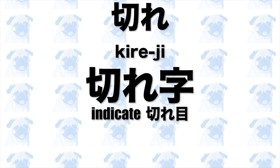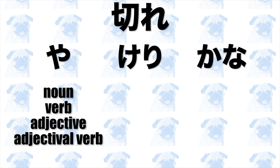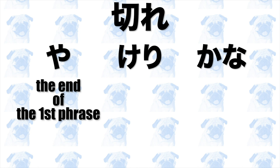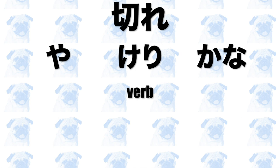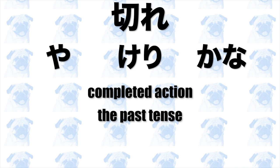Although not always necessary, there are a set of particles called kideji which explicitly indicate the kideme of a haiku. The most common kideji are ya, keri, and kana. Ya is normally preceded by a noun but can sometimes follow a verb, adjective, adjectival verb, or auxiliary verb. It tends to appear at the end of the first phrase and indicates admiration, surprise, and so on. Keri follows either a verb, adjective, adjectival verb, or auxiliary verb — and unlike ya, it cannot follow a noun. Keri expresses a completed action, so you can think of it as either the simple past tense or the present perfect.